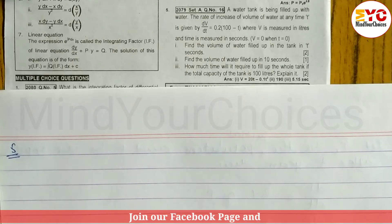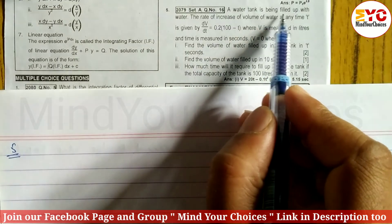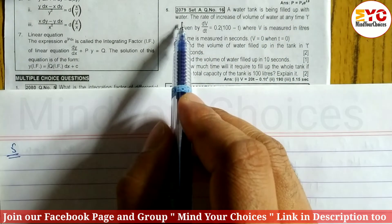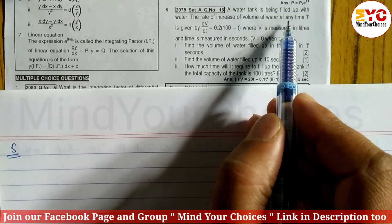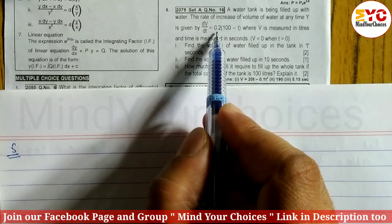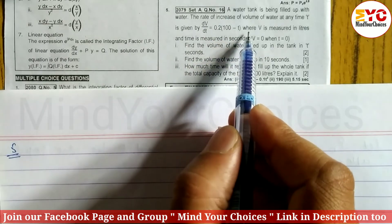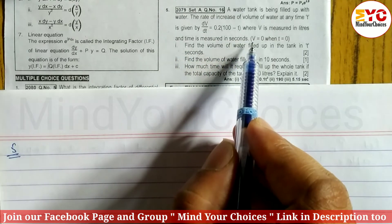Now look at question number 5. Question number 5: A water tank is being filled up with water. The rate of increase of volume of water at any time T is given by dV/dt equals 0.2(100 - T), where V is measured in liters and T is measured in seconds.